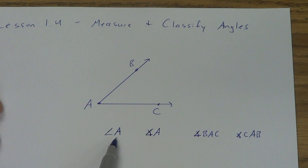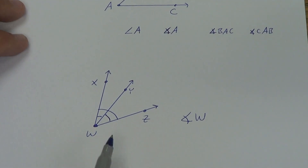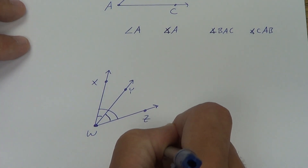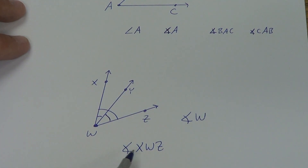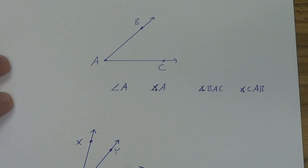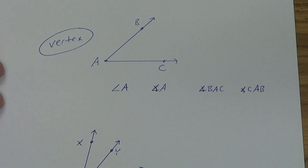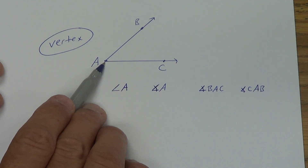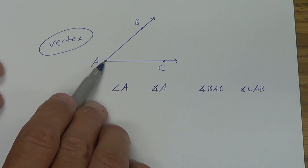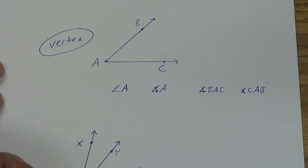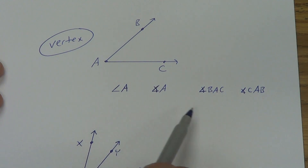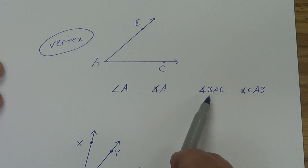That one letter is important — notice how the A is in the middle. That beginning point right there is called the vertex of the angle. That point, kind of the pointy part of the angle, is the one point where both rays start. When you name an angle, if you're going to use one letter, you use the vertex. If you use three letters, the vertex has to be in the middle.